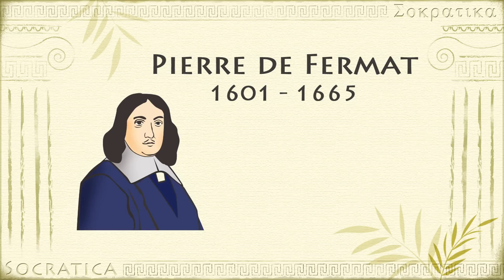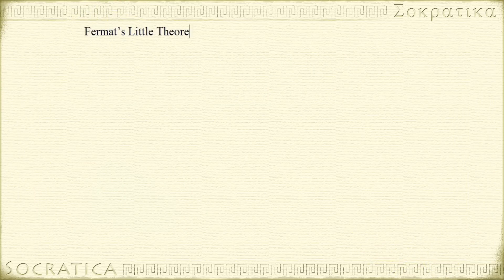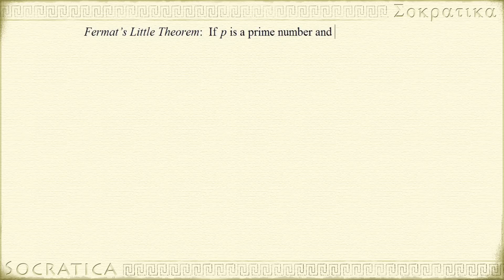One of his more famous results is now called Fermat's Little Theorem. Fermat's Little Theorem says that if p is a prime number and p does not divide the integer a, then a to the p minus 1 is congruent to 1 mod p.